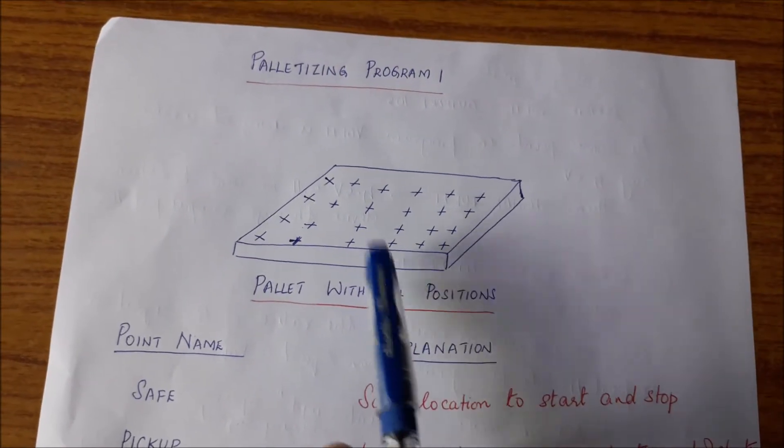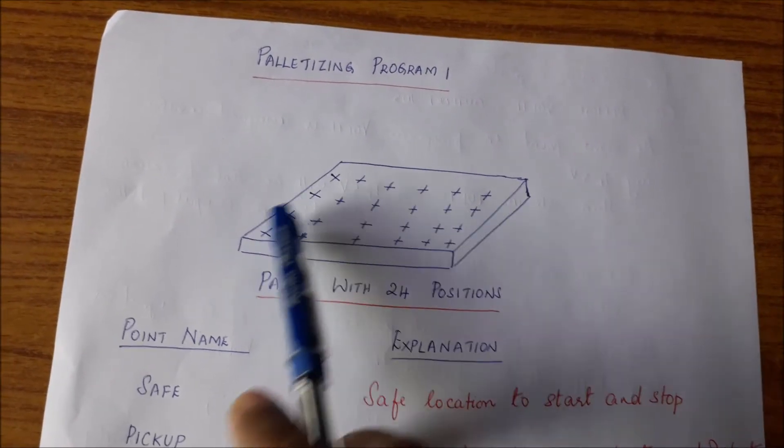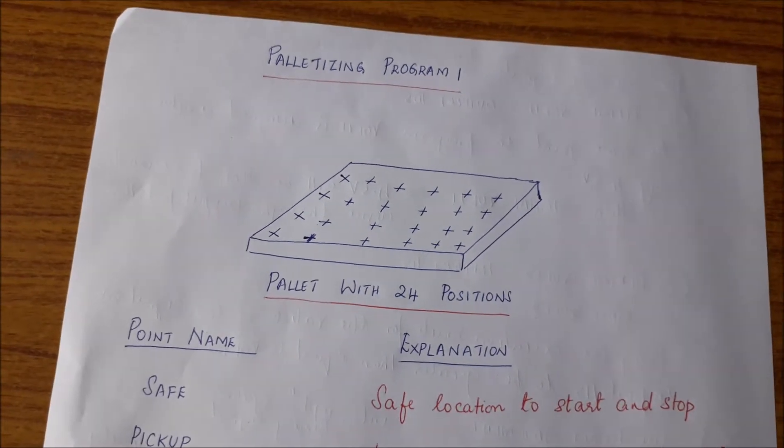What is a pallet? A pallet is like a tray that can be used to carry away multiple parts that have been processed by a machine.